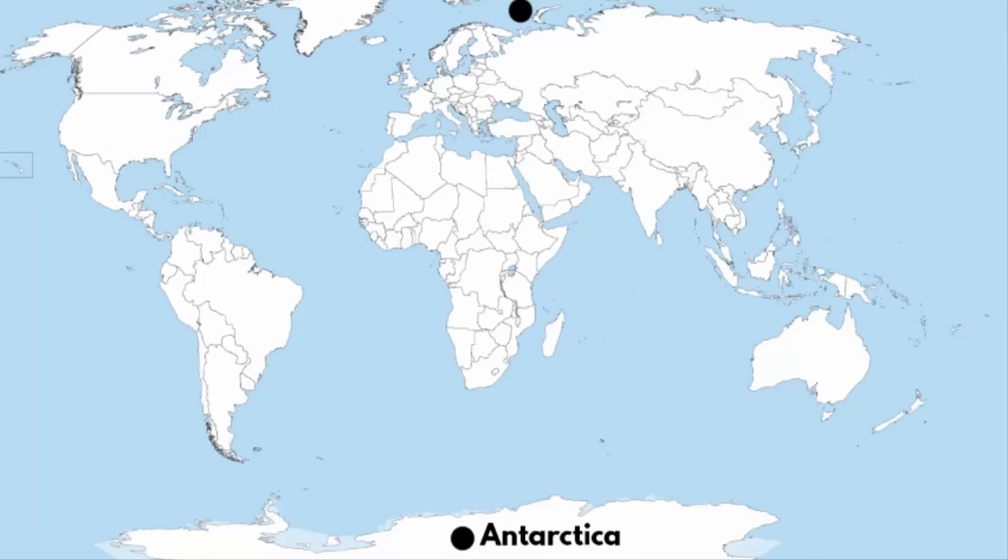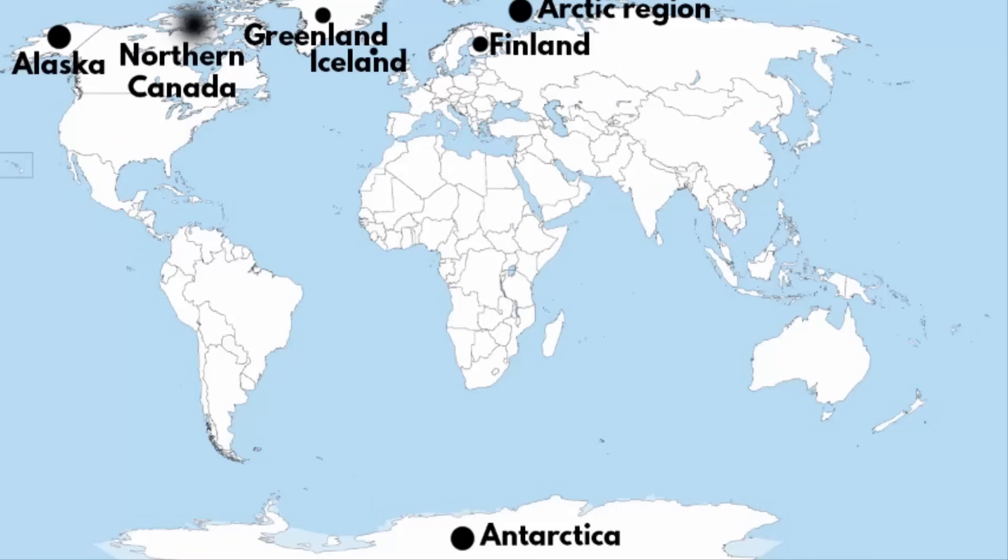Glaciers are commonly found in high latitude regions like Antarctica and Arctic regions which consist of places like Alaska, Finland, Greenland, Iceland, Northern Canada, Norway, Russia, and Sweden.